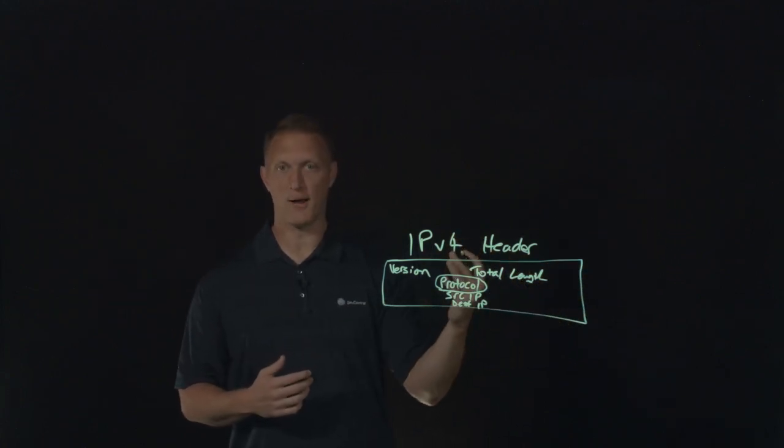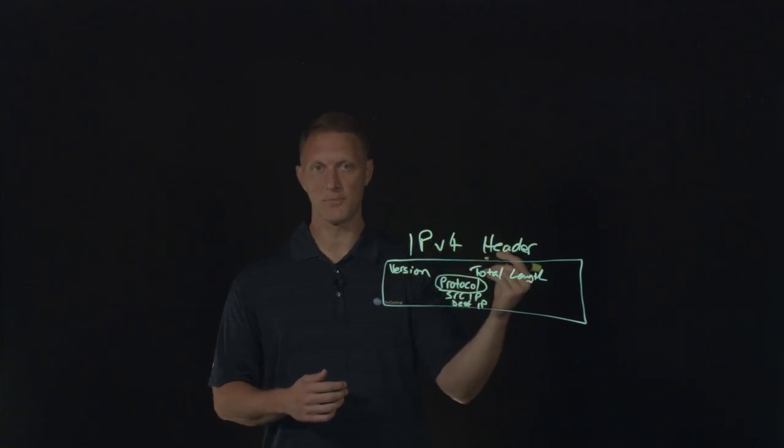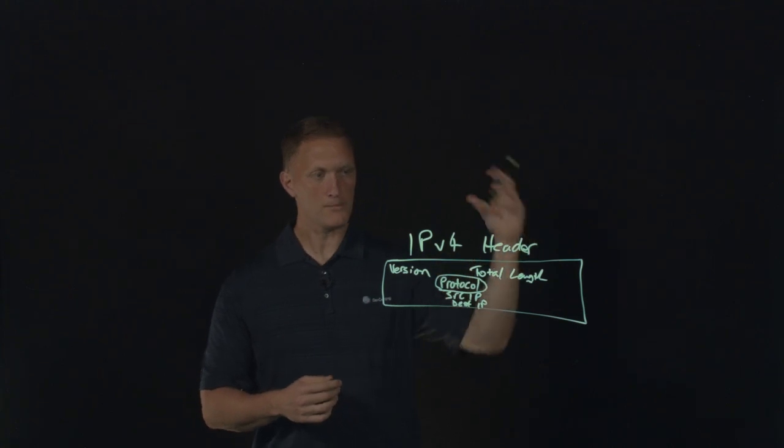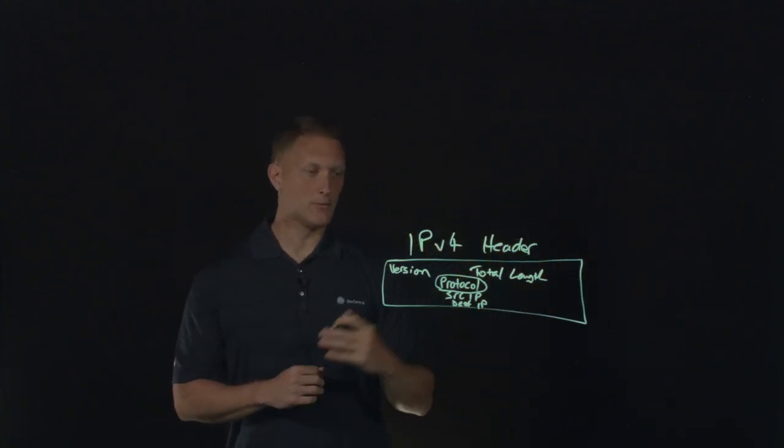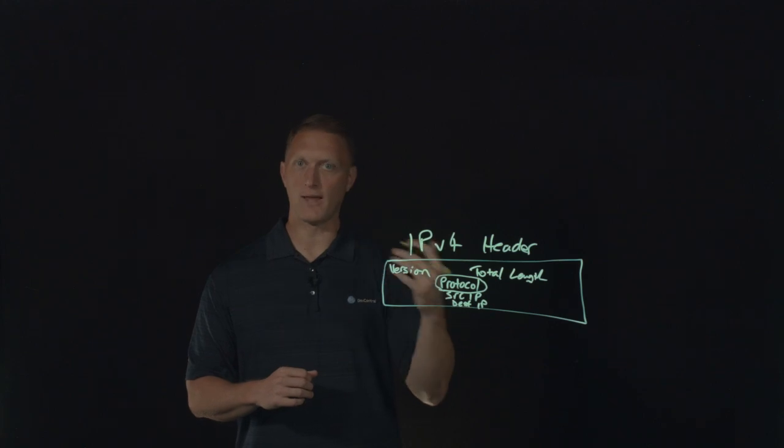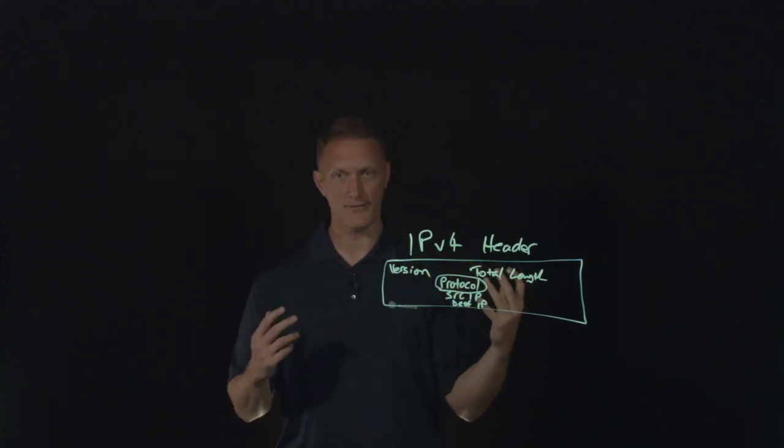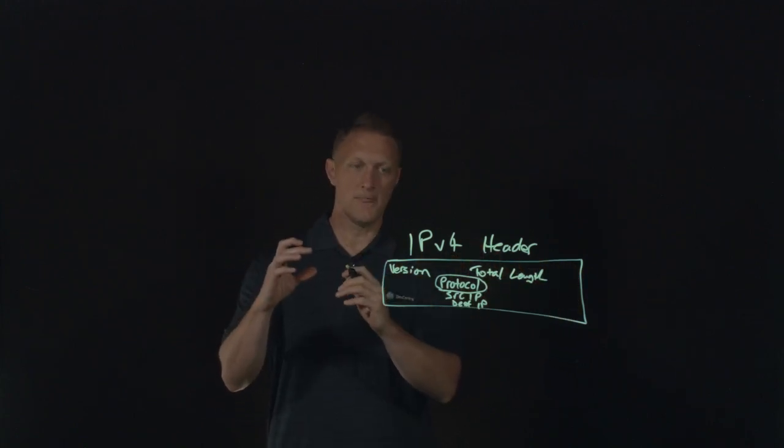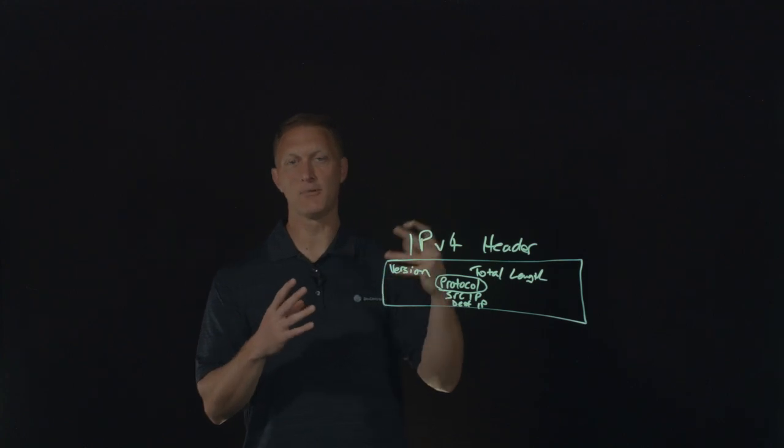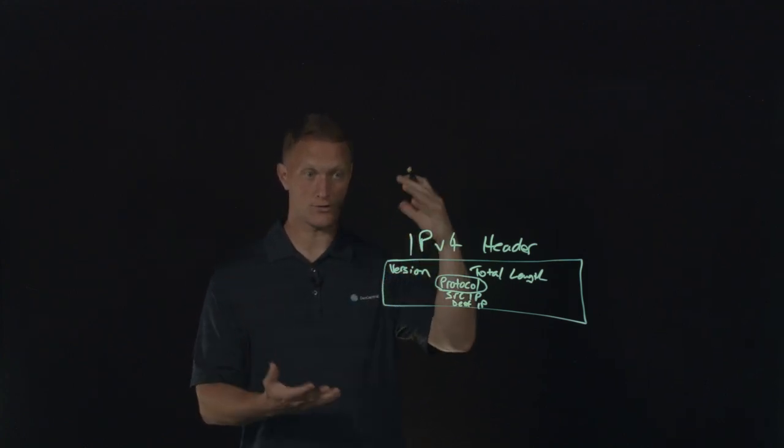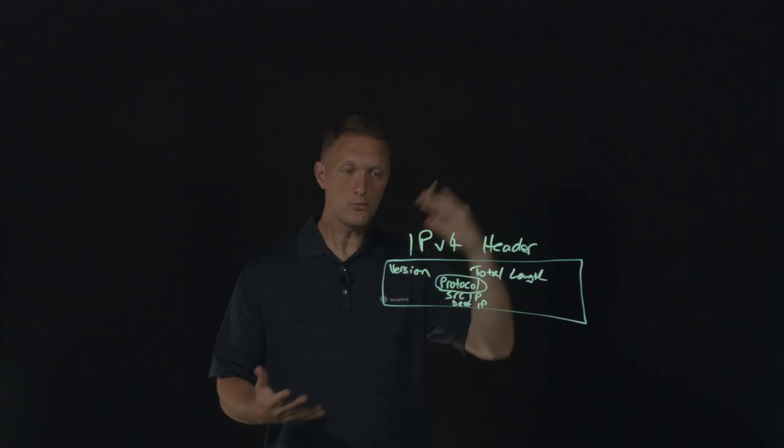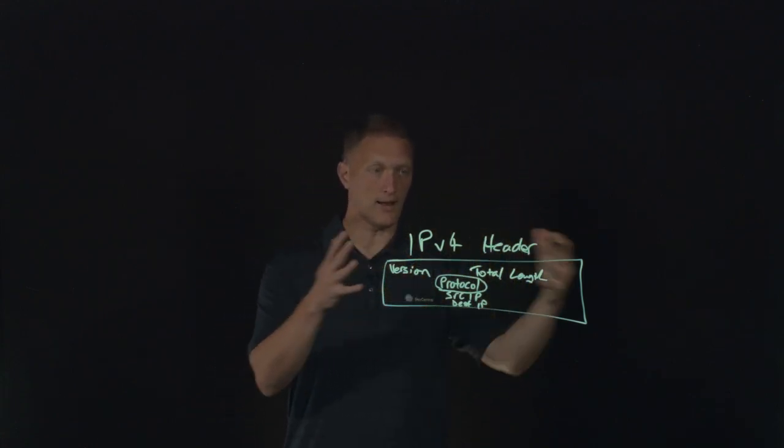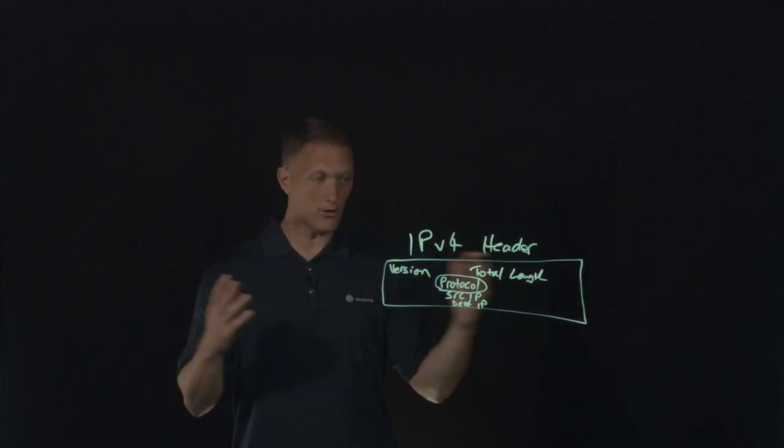So for example, a very popular one is TCP, the transmission control protocol. That's where you get the whole TCP IP. So it's TCP transmitted in an IP packet. Another popular one is UDP, the user datagram protocol. There's things like OSPF, open shortest path first. There's a whole bunch of them. And each one of them have a number and the internet assigned numbers authority or IANA describes all this and defines all this. And there's up to 255 protocols that are possible to be defined inside this IP header.